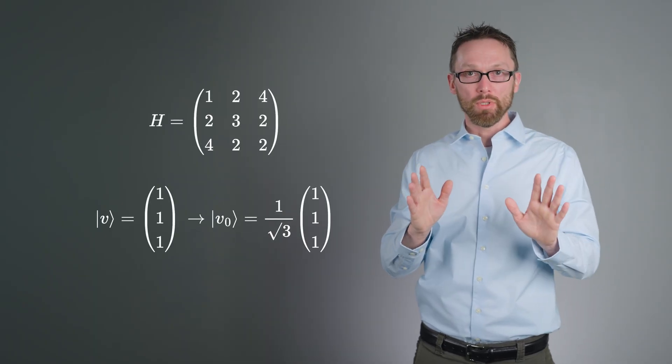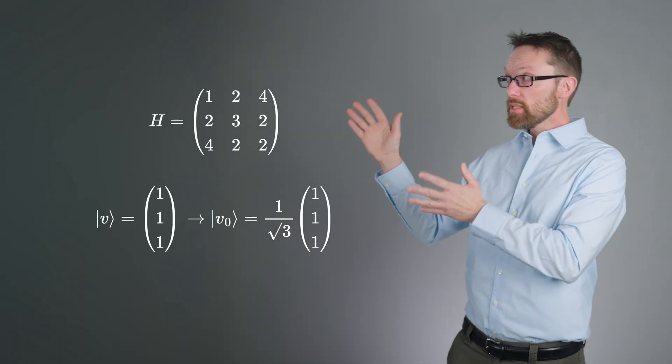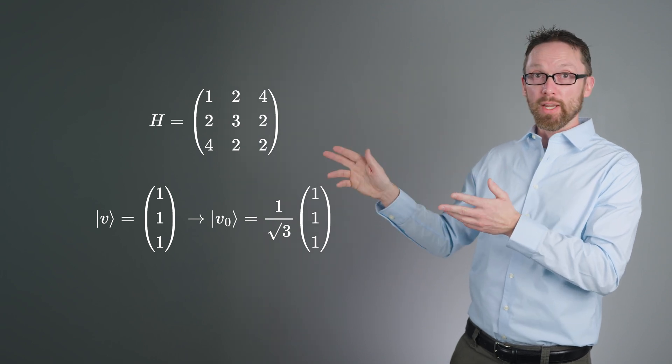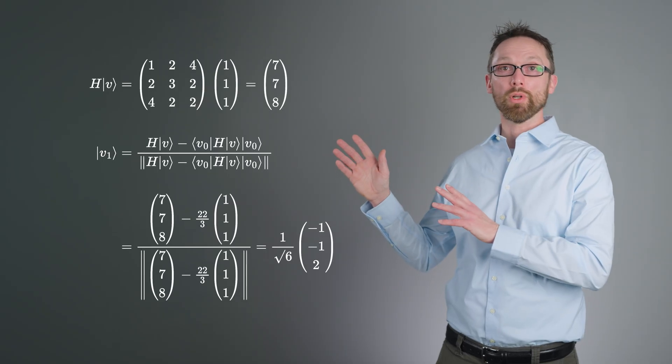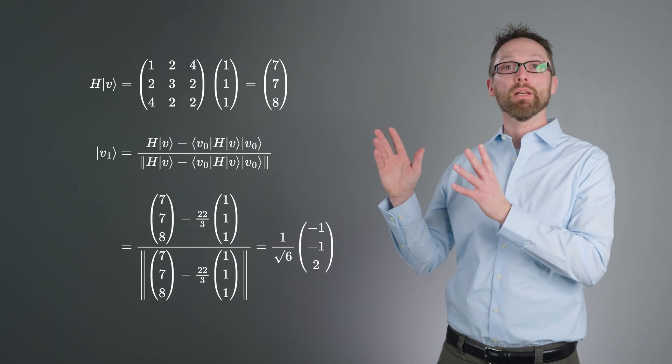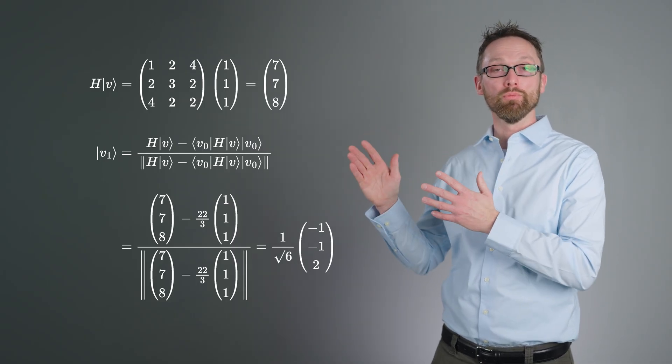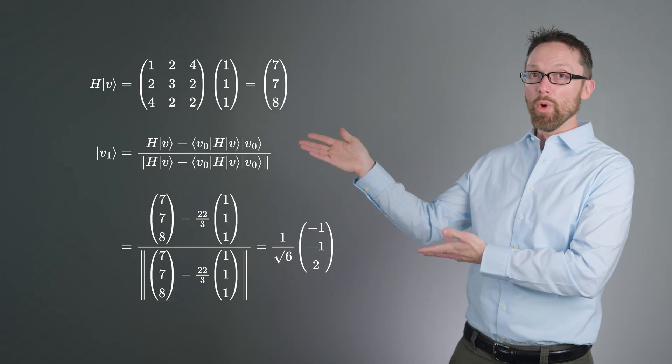To get a better sense of how this works, let's look at a trivial example. If H is this matrix, and V is chosen to be this vector, then we would start by normalizing V. To generate the second vector in a Krylov subspace, we act once with H on our initial vector, and then make that result orthogonal to V0. A little algebra yields this for V1.